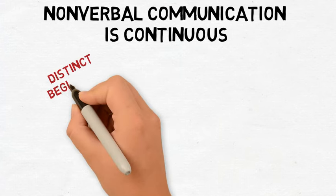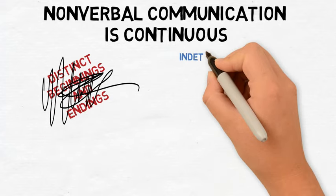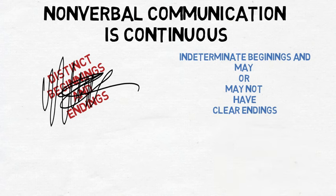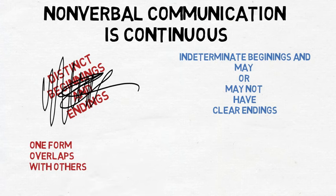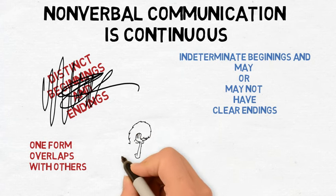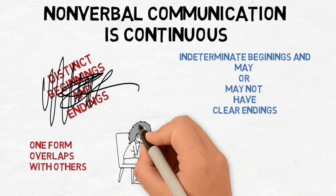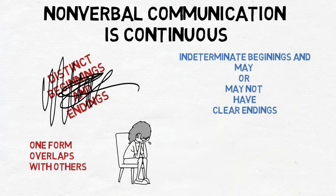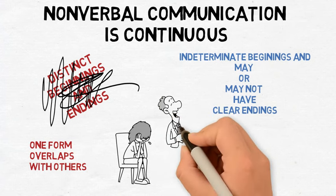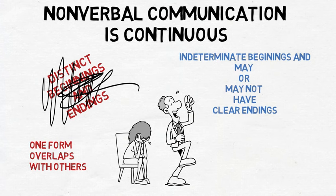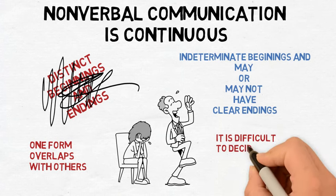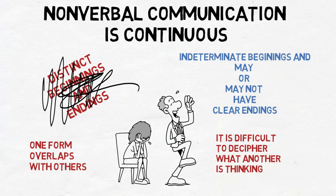Continuous forms of communication don't have distinct beginnings and endings as symbols like words do. Instead, they have indeterminate beginnings and may or may not have clear endings. Many times, one form of continuous communication overlaps with others that can either add more clarity or more confusion to what is being communicated. For instance, if a person is crying, frowning, and has slumping posture all at the same time, we might accurately assume the person is sad. But what if a person is crying and laughing at the same time? Is that as easy to decipher? In many cases of non-verbal communication, it can be difficult to decipher what another is thinking. Sometimes the only way you can know for sure what another is thinking is to ask — and even when asking directly, a person may still not be truthful in the reply.